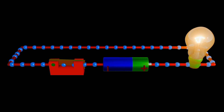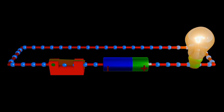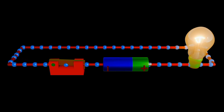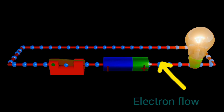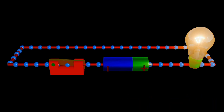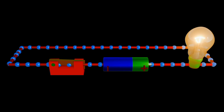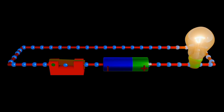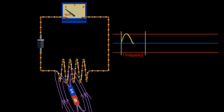On the other hand, direct current flows continuously in one direction, majorly from a DC source such as a battery. The aim of rectification is to convert this AC current to a pure DC current.